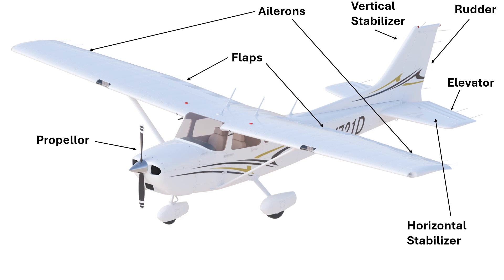The empennage includes the vertical stabilizer and the rudder, and the horizontal stabilizer and the elevator.